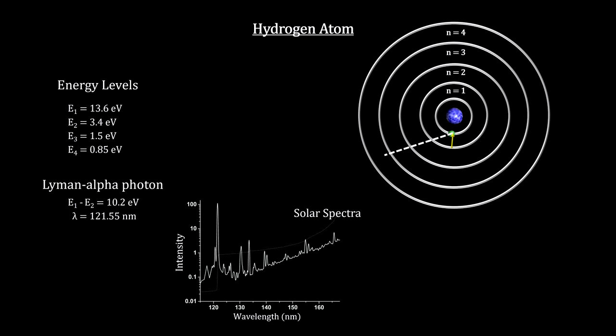This is called a Lyman alpha photon, after Theodore Lyman, the American physicist who discovered this series of spectral lines. It's in the ultraviolet range of the electromagnetic spectrum, and in large numbers they create the Lyman alpha emission line in the spectra.